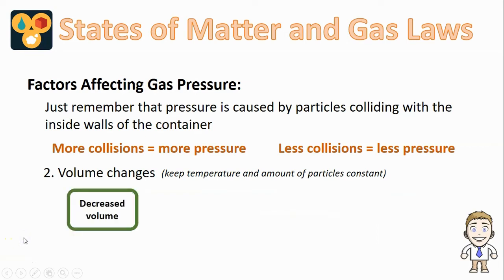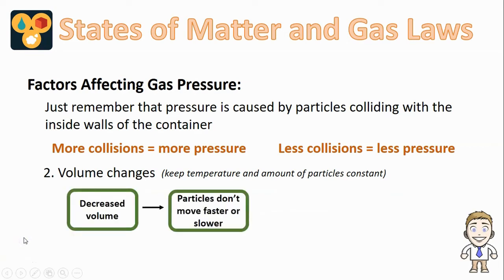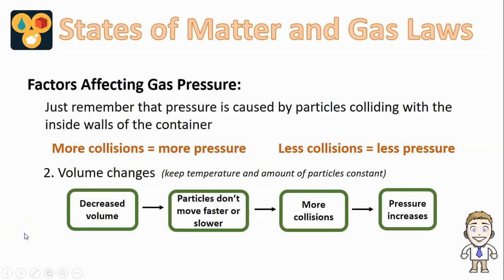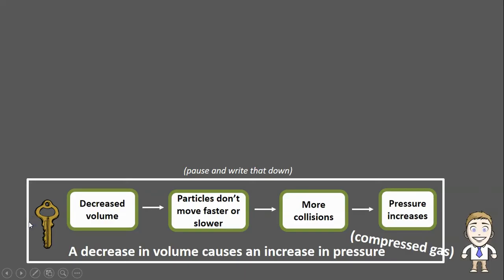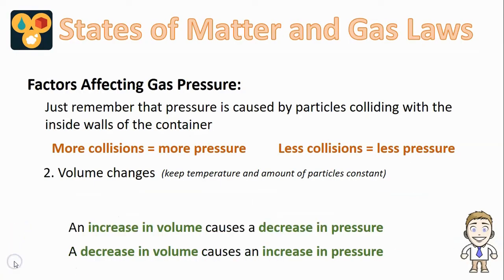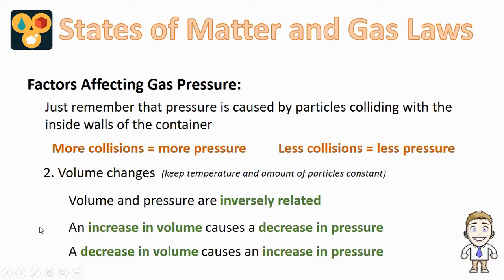The opposite effect is seen with a decrease in volume. The particles keep moving at the same speed, but they will be colliding more. Now they're in a much smaller space, so they can collide with the walls more often. More collisions means greater pressure. So a decrease in volume causes an increase in pressure — this is also known as a compressed gas, where you take a large sample of gas and squeeze it into a very small volume. Putting these two ideas side by side, an increase in one causes a decrease in the other — a relationship we know as inverse.